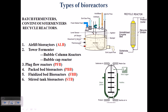The type of bioreactor will vary according to the type of fermentation we need to carry out. For example, we have batch fermenters, continuous fermenters, and recycle reactors. Here we are having this batch fermenter, this is the continuous fermenter, and this is the recycle fermenter. We will be talking about batch fermentation, continuous fermentation, and recycling fermentation later.